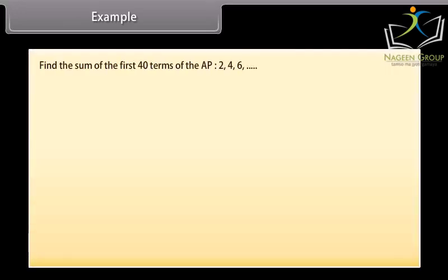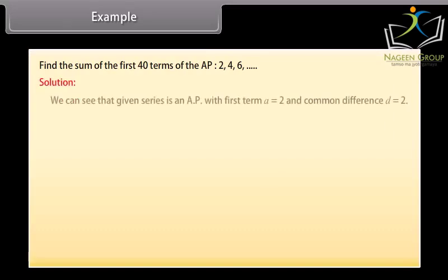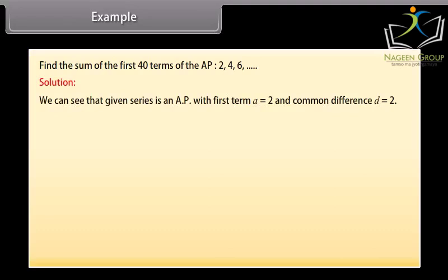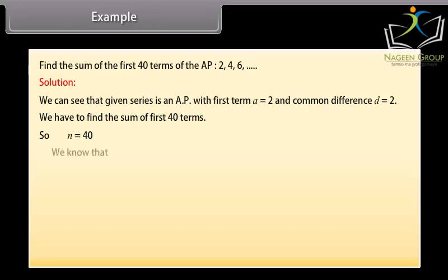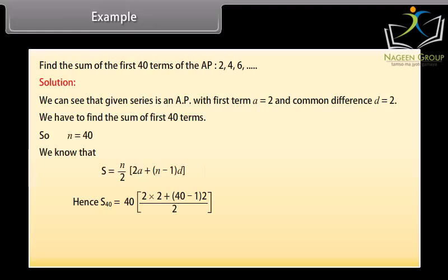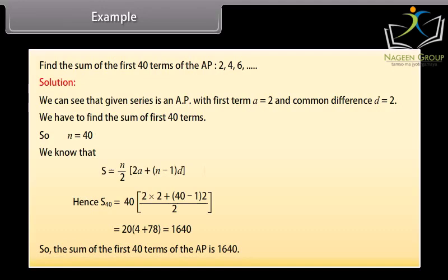Example: Find the sum of the first 40 terms of the AP 2, 4, 6, and so on. The given series is an AP with first term A equal to 2 and common difference D equal to 2. We have to find the sum of first 40 terms, so N equals 40. We know S = n/2 into (2a + (n minus 1) into d). Hence S40 = 40/2 into (2 into 2 + (40 minus 1) into 2) = 1640. The sum of the first 40 terms of the AP is 1640.